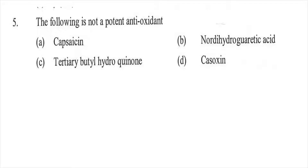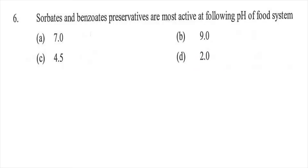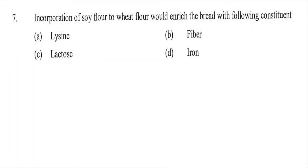The right answer for question five is option D, casoxin. Question six: Sorbate and benzoate preservatives are most active at which pH of the food system — option A 7, option B 9, option C 4.5, or option D 2? The right answer is C, 4.5.